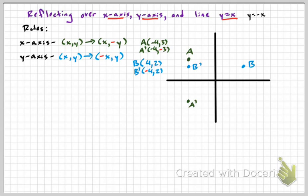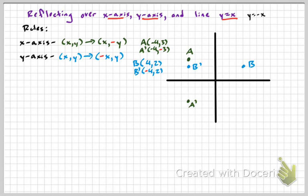For the X axis and Y axis reflections, it's probably easier to just count the distance rather than trying to remember the rules — four units from your Y axis, four units back; three units from your X axis, three units back. The rule you really want to remember is for the diagonal lines, because those are very hard to count.